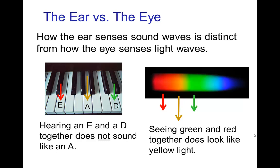Getting back to the analogy between the ear and the eye — there's actually a very distinct difference between how the ear senses sound waves and how the eye senses light waves. When you play two notes, you hear them as separate notes; you don't perceive it as being the note in the middle. On the other hand, when we have red photons and green photons and we see them simultaneously, we actually do perceive that as the color of the photons in between. So the ear is more discerning to mixtures of frequencies than the eye is to mixtures of different wavelengths.